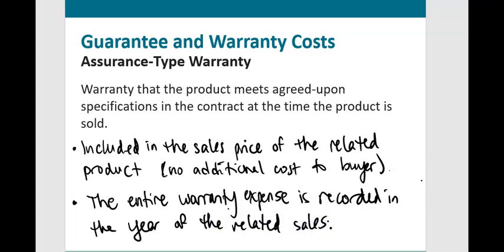There is an additional cost to the seller because they are providing this warranty. The fact that they might have to pay out in future accounting periods is why warranties are an example of a loss contingency. In the period that the goods are sold, the entire warranty expense and the related offsetting warranty liability are recorded in the year of the related sale.